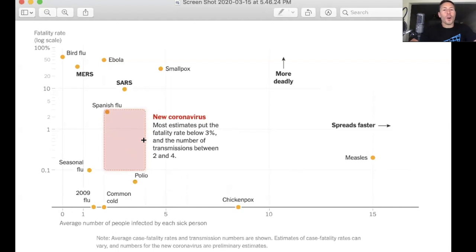The estimates for coronavirus are 2.2 to 3.4 for the R0. So the combination of being moderately transmissible and being more deadly, more virulent, having a case fatality rate that's higher than the flu, make this more of a big deal than the flu, which is why things are happening the way they are.